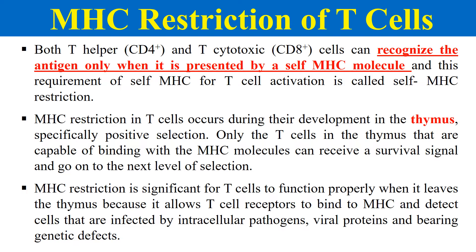This MHC restriction generally develops during T-cell maturation in the thymus. What exactly happens is that T-cells which have the capacity to bind MHC molecules are the only ones allowed to survive during their development. T-cells which do not have the capacity to bind MHC molecules are cleared out before they enter the bloodstream. So during development, only T-cells that can bind MHC are allowed to survive while others are destroyed.